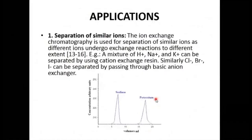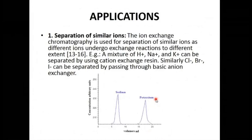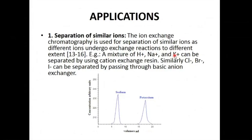Let us talk about applications. First, separation of similar ions: ion exchange chromatography is used for separation of similar ions, as different ions undergo exchange at different rates. Although all carry unit charge, differences in electronegativity mean that H+, Na+, and K+ will bind at different forces to a negatively charged stationary phase. As seen in a chromatogram, sodium will come out of the column first, then potassium. Similarly, chloride, bromide, and iodide can be separated. Ion exchange columns are also used in households.